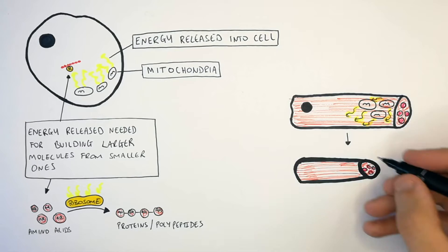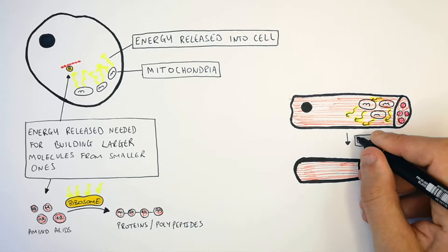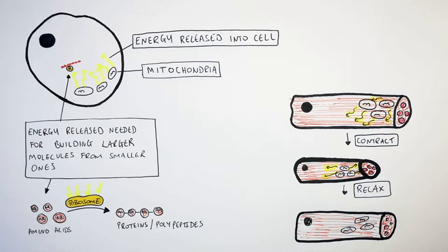This shows a muscle cell contracting, getting shorter, and then the muscle cell is going to relax and get longer.